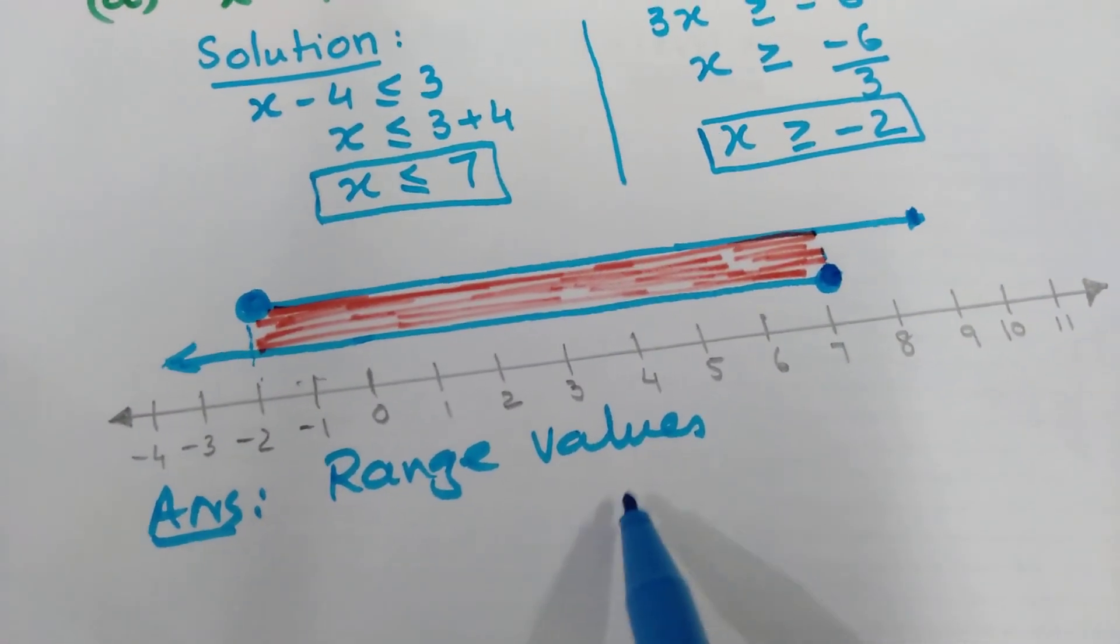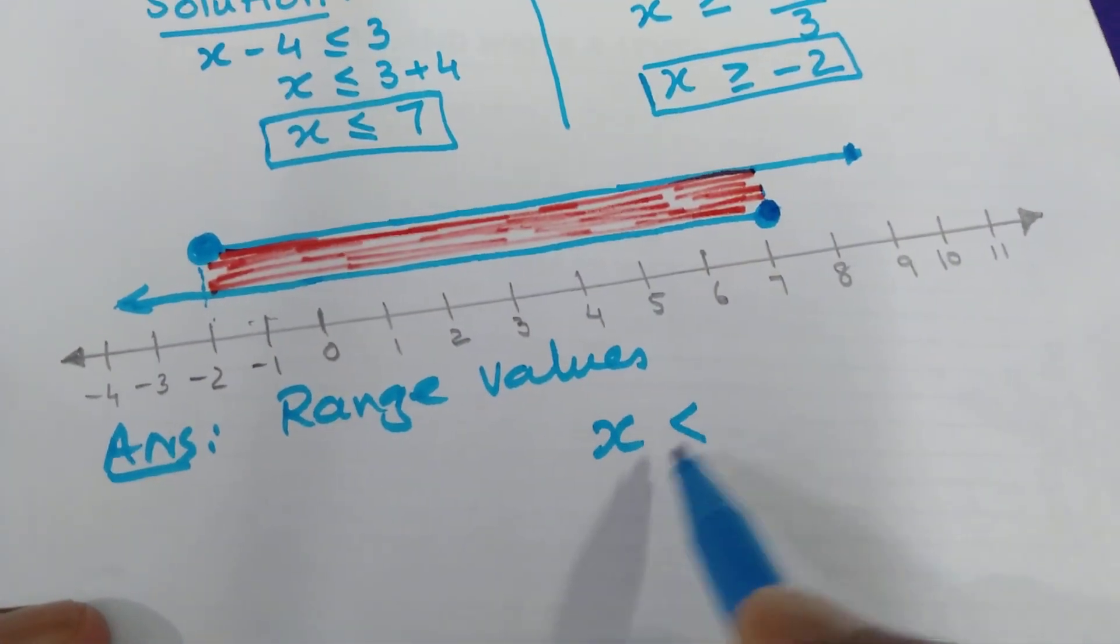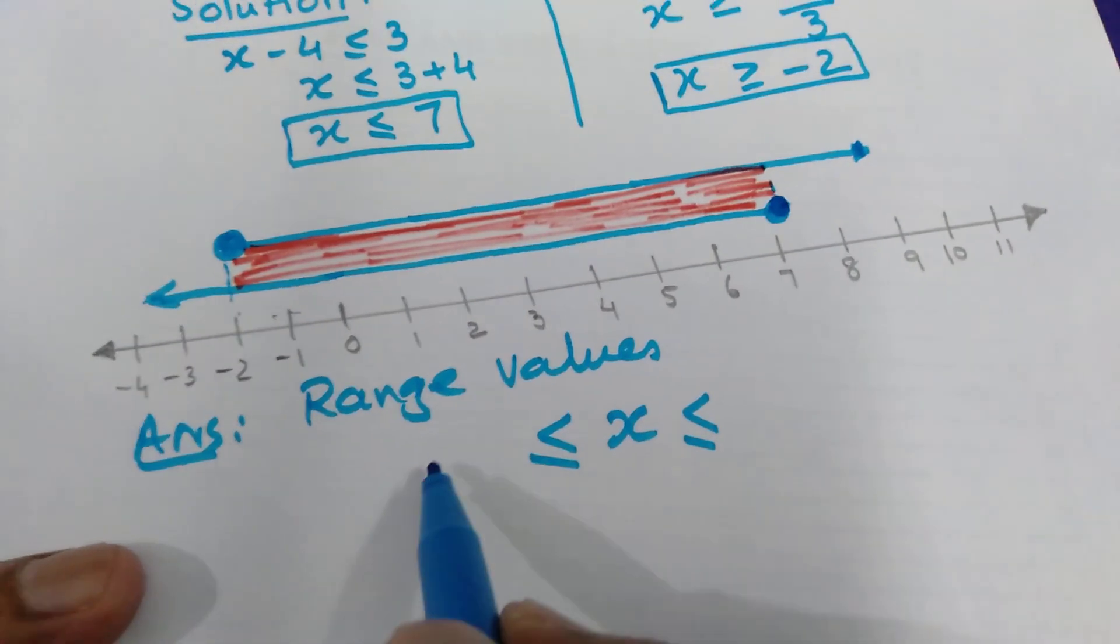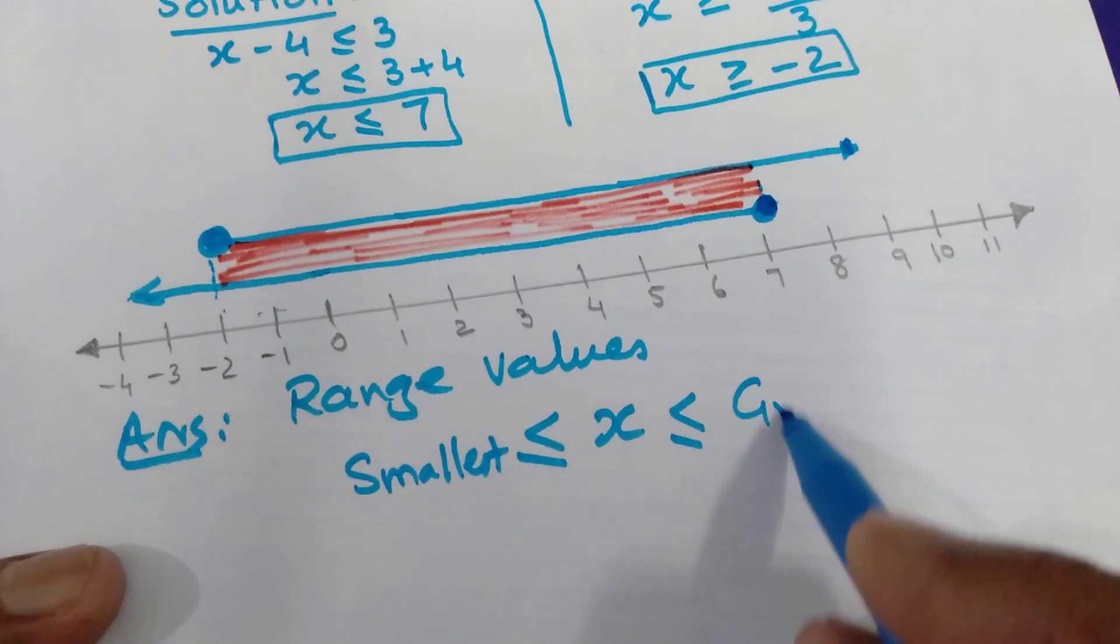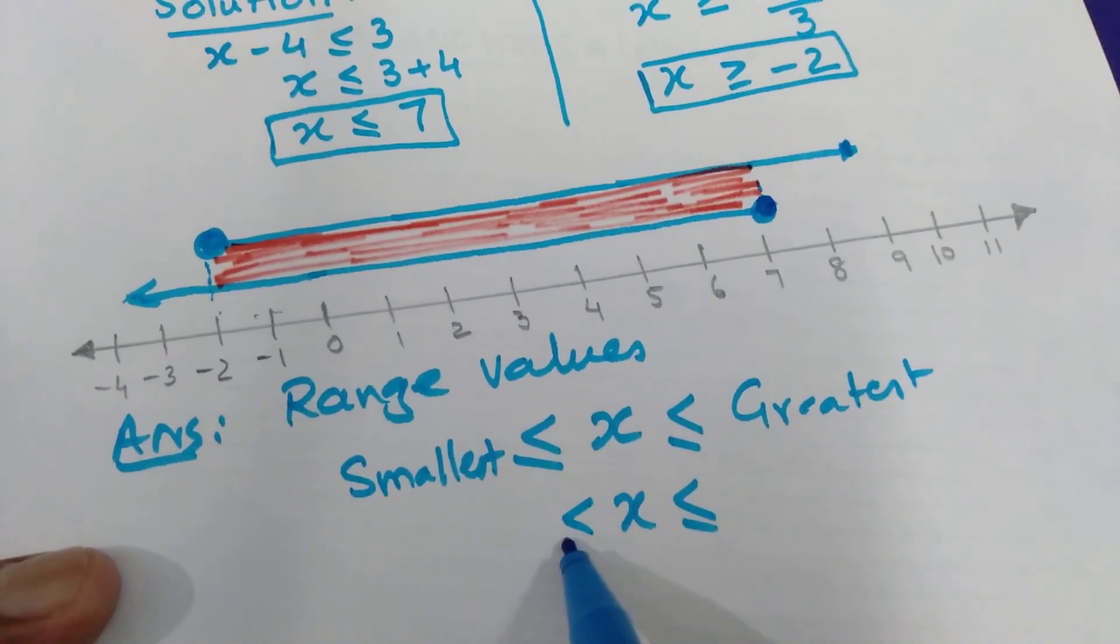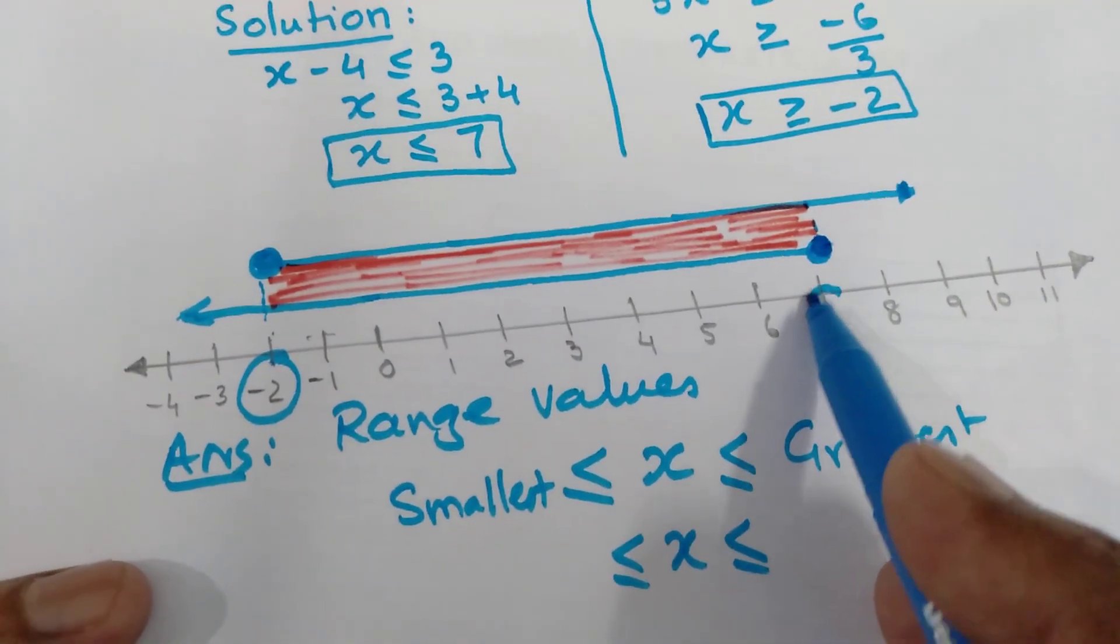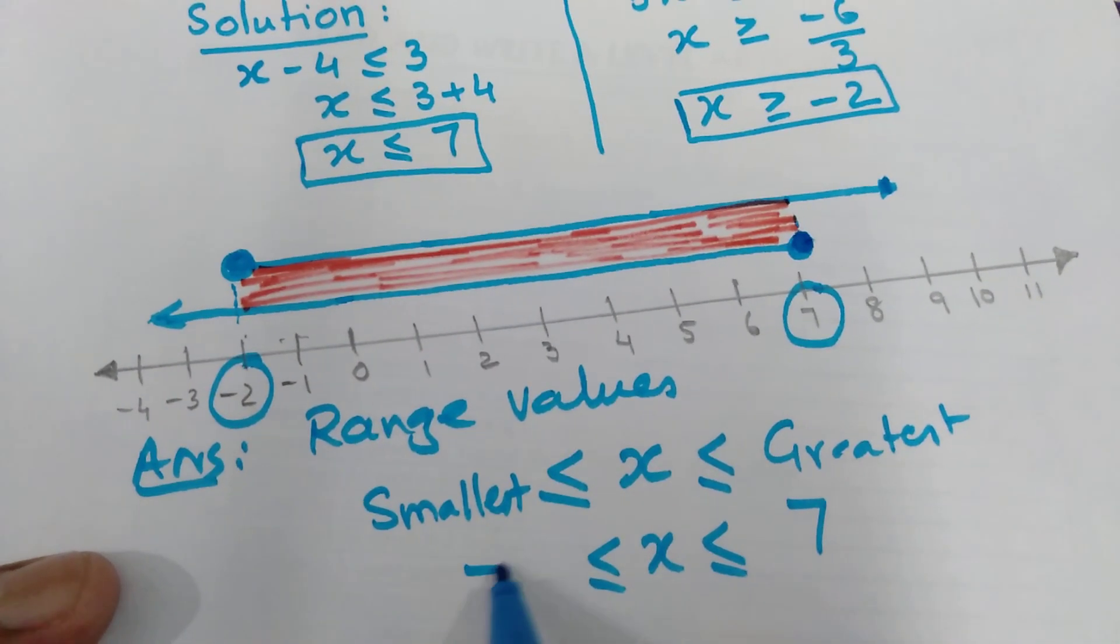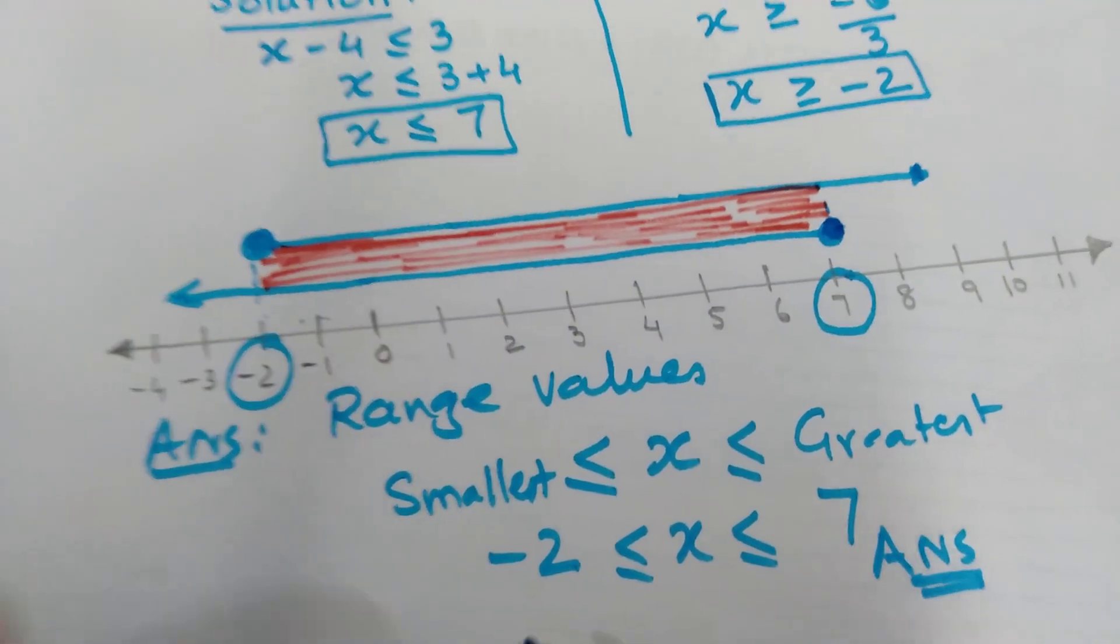How can you write range values? x is less than or equal to and greater than or equal to: smallest value and greatest value. What is the smallest value? The smallest value is minus 2 and the greatest value is 7. So you write minus 2 less than or equal to x less than or equal to 7. This is your answer for range value of x.